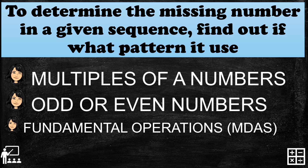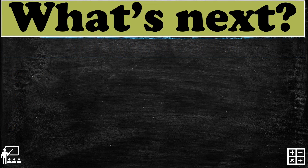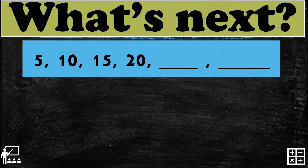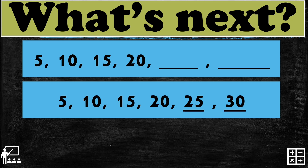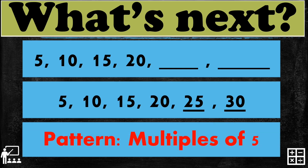My first sequence is 5, 10, 15, and 20. Can you guess what are the two next numbers in the sequence? That's right, they are 25 and 30. So the sequence for this example is 5, 10, 15, 20, 25, and 30. The pattern used is multiples of 5, or addition by 5.